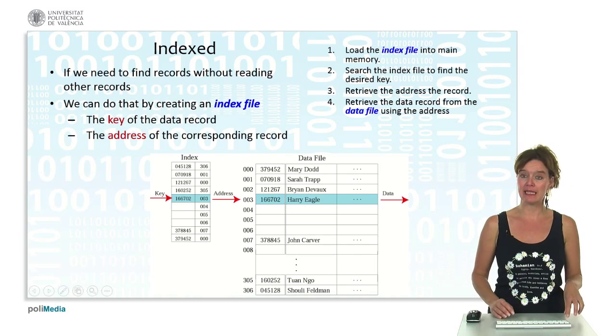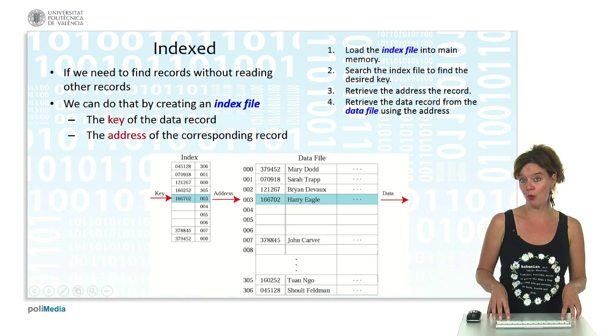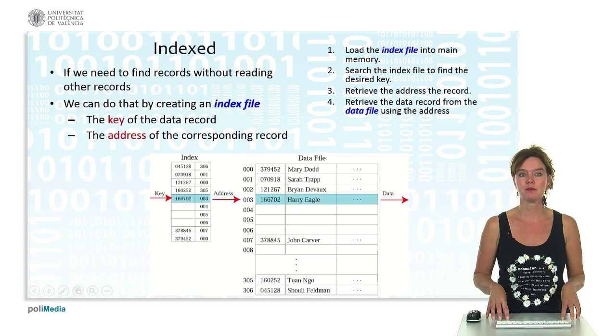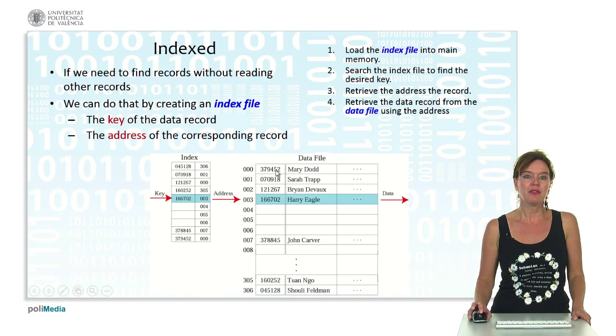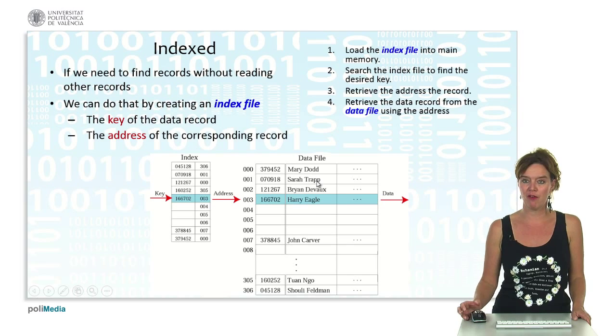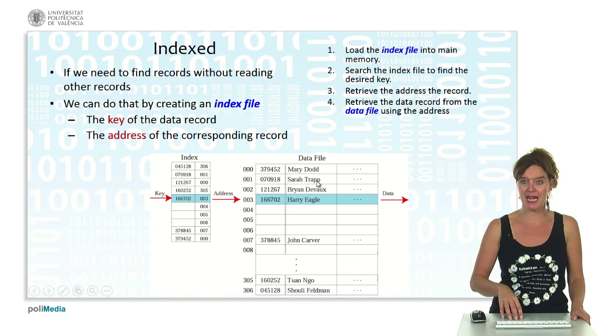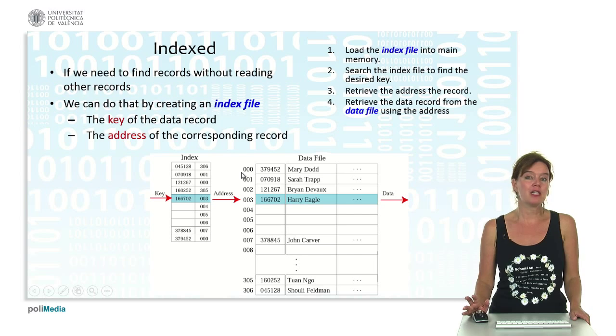This index file actually indicates for each data record how to find it by maintaining a key of the data record and an address in memory or on disk where the specific record belonging to that key can be found. You can see this here on the picture: the index file with the keys and addresses, and the data file that actually contains the records of data.